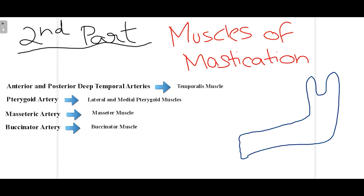For the second part, remember that it supplies the muscles of mastication. First are the anterior and posterior deep temporal arteries, which supply the temporalis muscle. Second is the pterygoid artery, supplying the lateral and medial pterygoid muscles. Third is the massetric artery, supplying the masseter muscle. Lastly, the buccinator artery supplies the buccinator muscle. These are the muscles attached to the mandible that help in mastication.